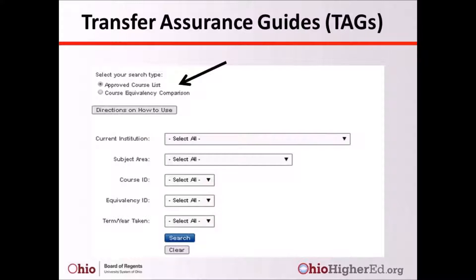The search categories available to narrow your results include current institution, subject area, course ID, equivalency ID, TAG course, and term and year taken. The more information you fill in, the more specific information you will receive.